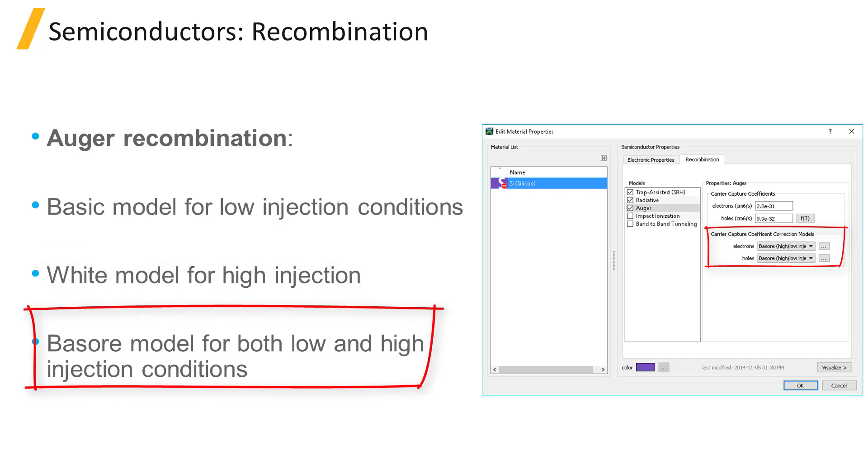The BASER model is designed to account for the two regimes related to minority carrier injection. When using this model, the solver will use the Auger capture rate coefficient defined in the BASIC model for low injection conditions and apply a second coefficient when a strong minority carrier injection dominates.